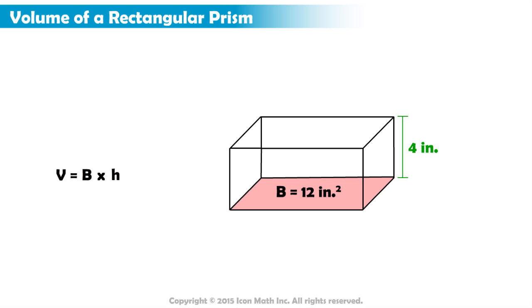Let's now calculate the volume of our rectangular prism using this formula. The area of the base is 12 inches squared, so we substitute 12 for B. And we replace the height H with 4.